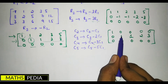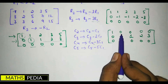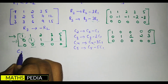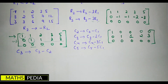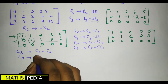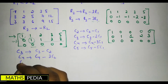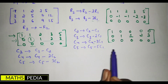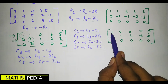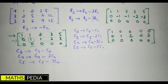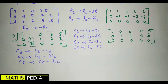Now we focus on C2 to eliminate the remaining elements. We apply C3 = C3 − C2, C4 = C4 − 2C2, and C5 = C5 − 3C2. We focus on C2 because it has a leading 1. We don't focus on zero elements — we only focus on the column with a 1 to make the other elements in that row zero.